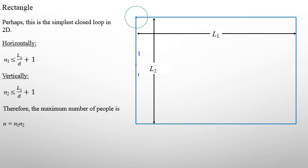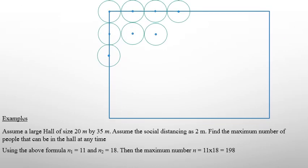The very first simple case is a rectangle. If I assume this is L1 and the width is L2, then the formula we introduced earlier can be applied in each direction. The maximum number in the L1 direction is N1 and in the L2 direction is N2. The maximum number we can accommodate in this rectangular hall will be equal to N1 times N2. As a simple numerical example, a hall of 35 meters by 20 meters gives a maximum of 198 people.